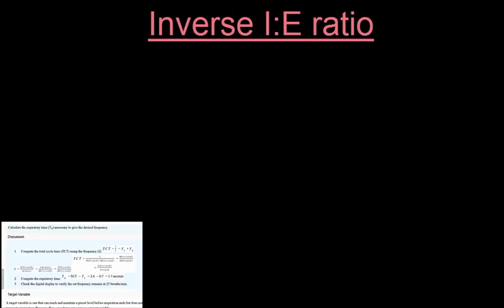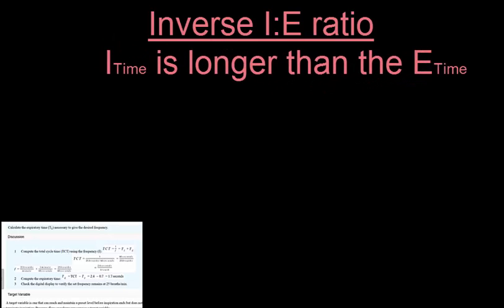Occasionally we want to inverse the IE ratio — making the inspiratory time longer than the expiratory time. This is called an inverse IE ratio, and may be designated as 2:1 or equivalently as 1:0.5.